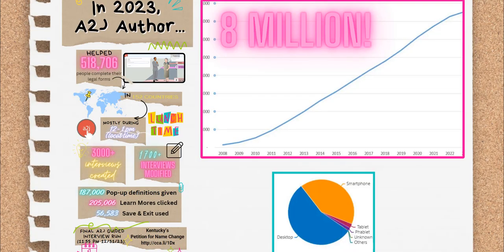These A2J guided interviews have been used over 8 million times by self-represented litigants in 44 states and 4 countries. In 2023, we helped 518,706 people to learn about their rights, what legal remedies were available to them, and to complete the paperwork they'd need for court. We saw traffic from 152 countries, with most people coming to our interviews during their lunchtime. We had over 3,000 new A2J guided interviews created, and another 1,700 modified. Our just-in-time learning features were used hundreds of thousands of times: 187,000 pop-up definitions were clicked, and 205,000 additional explanations, called learn-mores, were used. About half of those 520,000 people accessed the interviews on their phones.